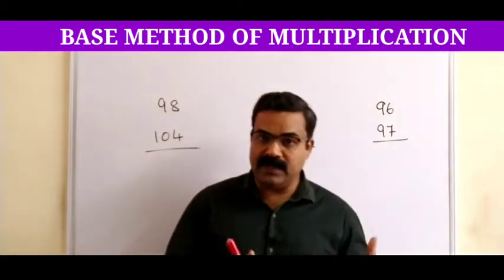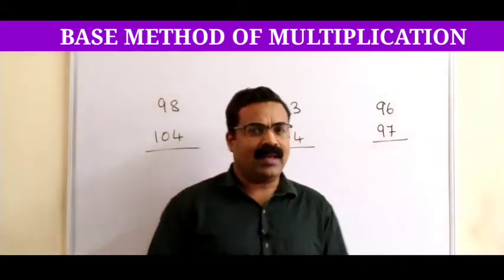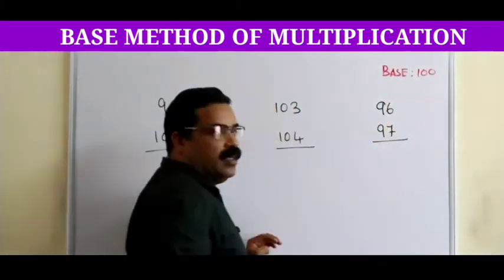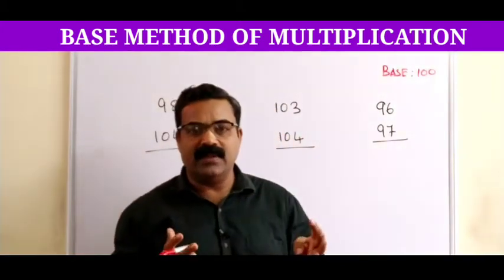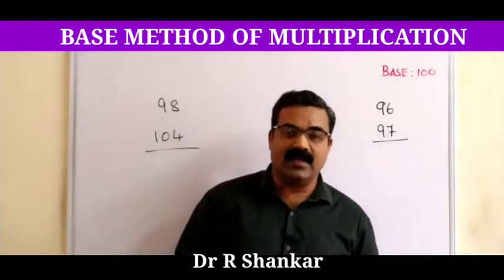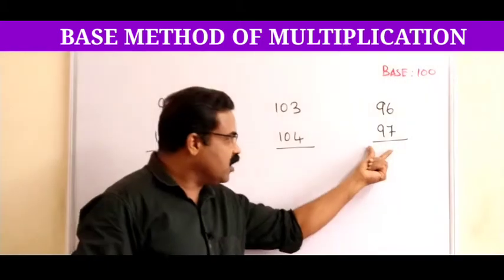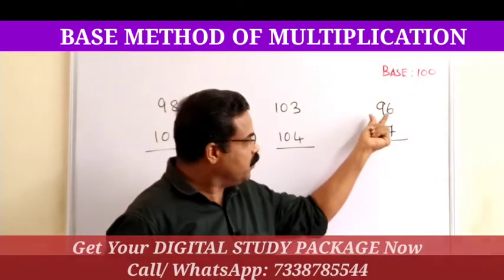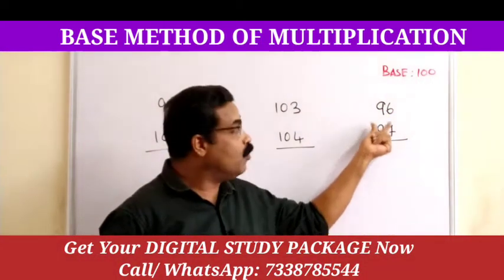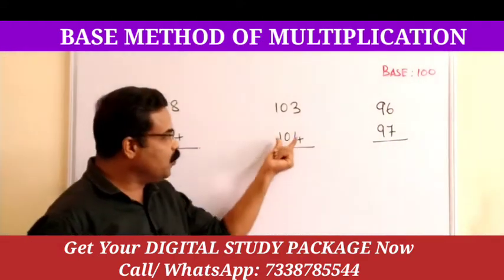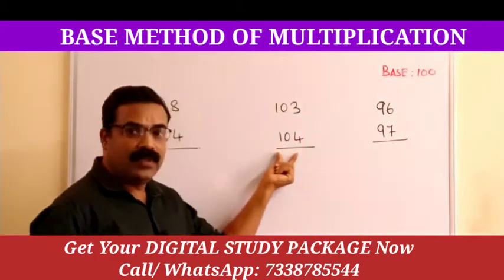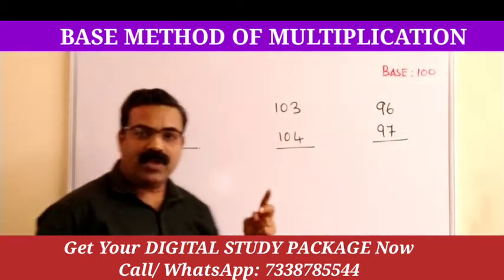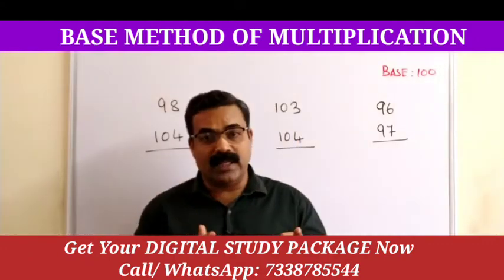In this video we are going to see the base method of multiplication with the base number 100. When we talk about base 100, we normally take numbers near 100 — it can be less than 100 or more than 100. Looking at the group of numbers written here, you can see a pattern: in the first two, both numbers are less than 100.